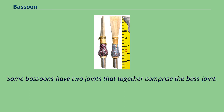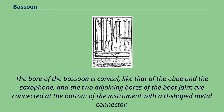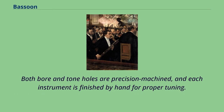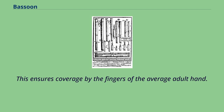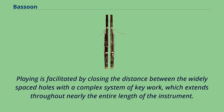Some bassoons have two joints that together comprise the bass joint. The bore of the bassoon is conical, like that of the oboe and the saxophone, and the two adjoining bores of the boot joint are connected at the bottom of the instrument with a U-shaped metal connector. Both bore and tone holes are precision machined, and each instrument is finished by hand for proper tuning. The walls of the bassoon are thicker at various points along the bore where the tone holes are drilled at an angle to the axis of the bore, which reduces the distance between the holes on the exterior, ensuring coverage by the fingers of the average adult hand.